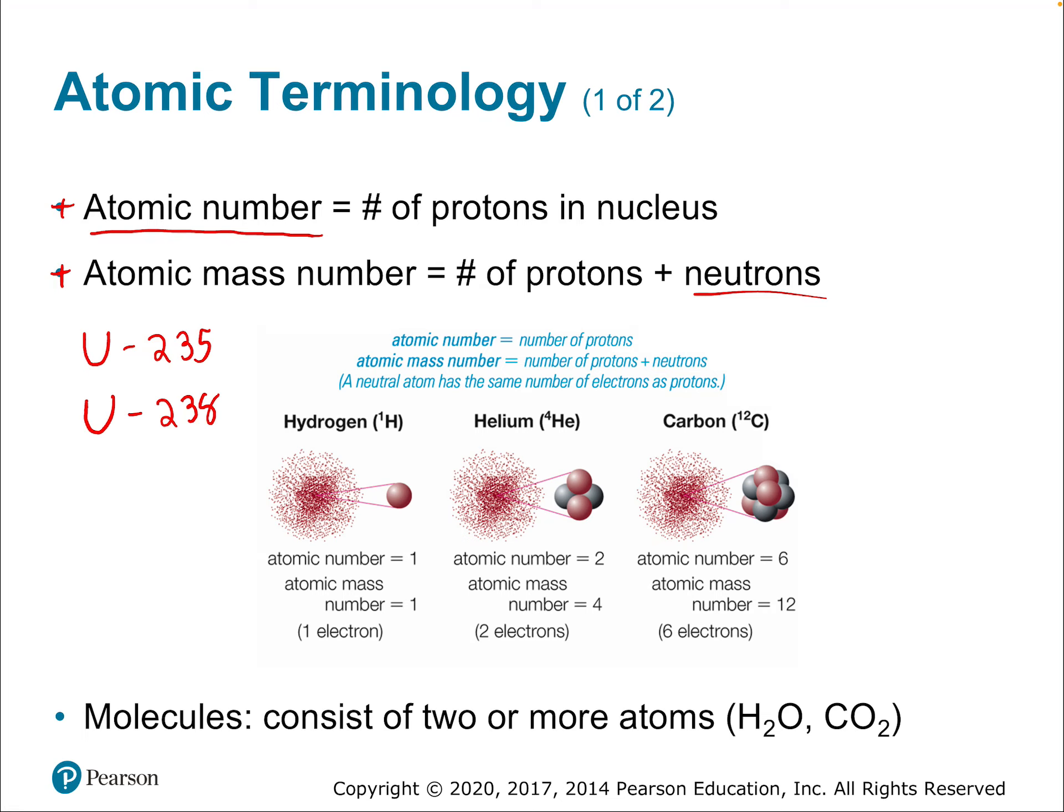But the atomic mass number includes consideration of the neutrons. That's relevant because there's lots of cases where there is an element, especially the heavier elements, that have certain amounts of the population of that element that don't all have the same number of neutrons. For example, if you look at uranium, the heaviest naturally occurring element, some uranium has 235 for its atomic mass number, other uranium has 238.